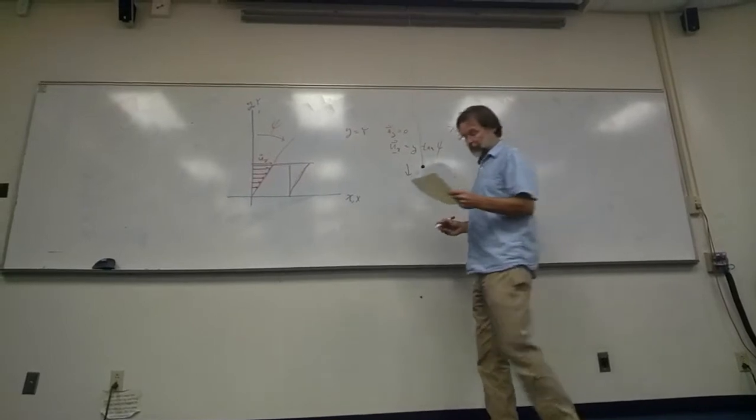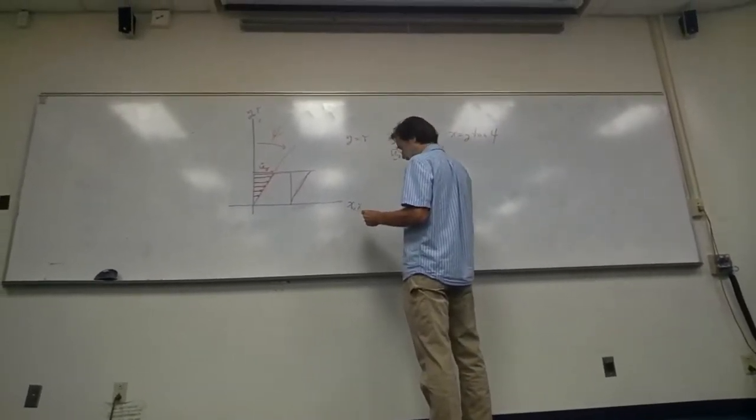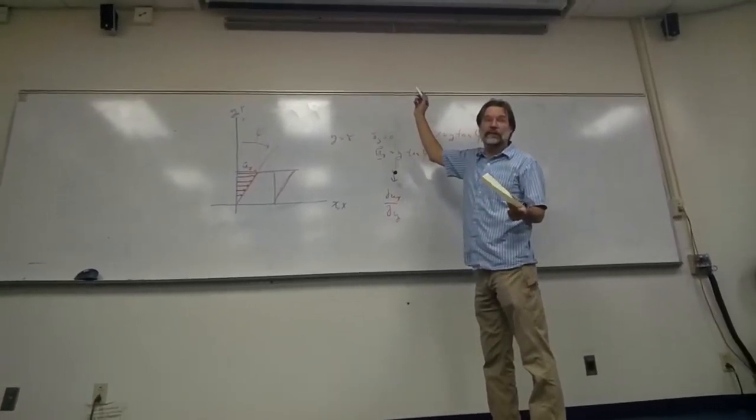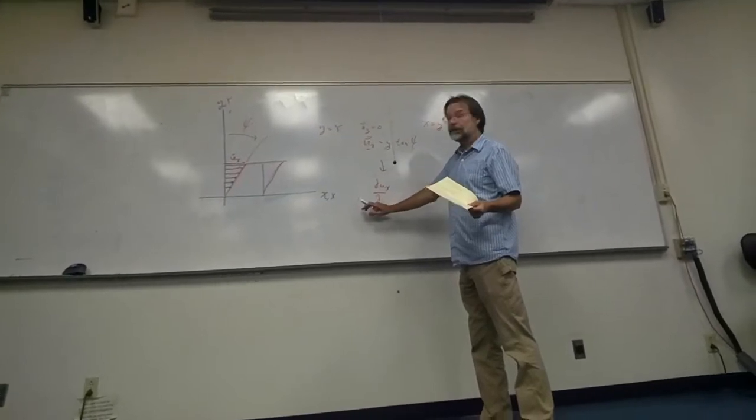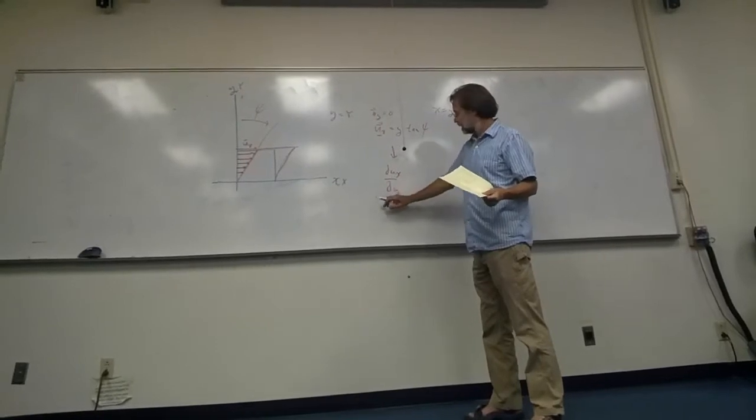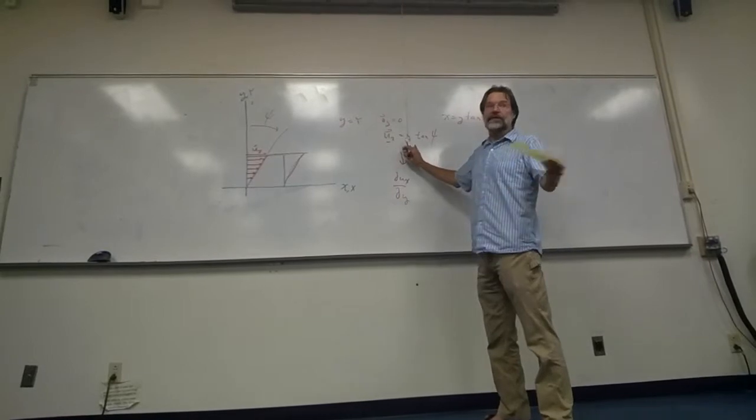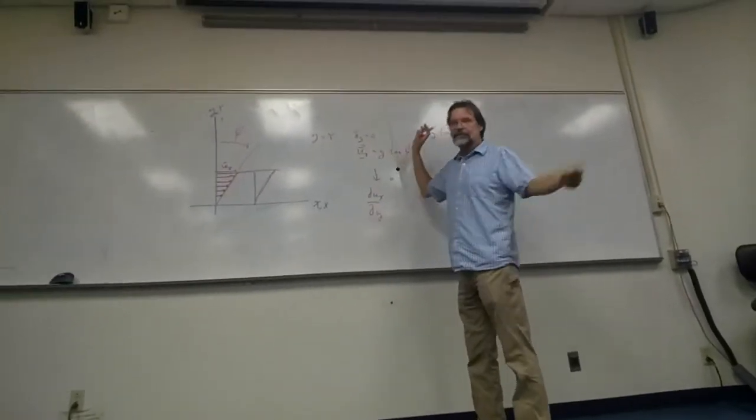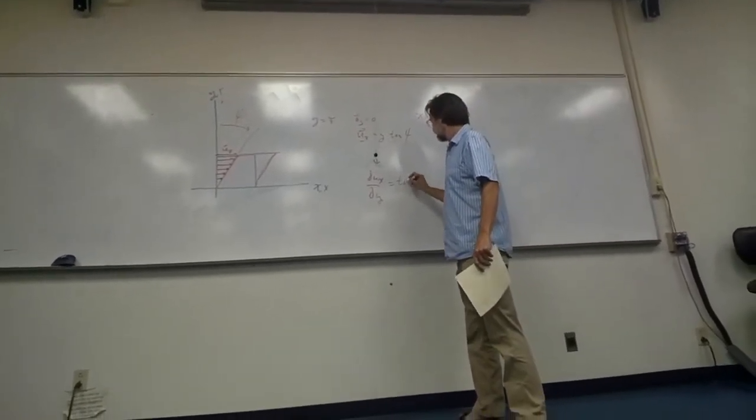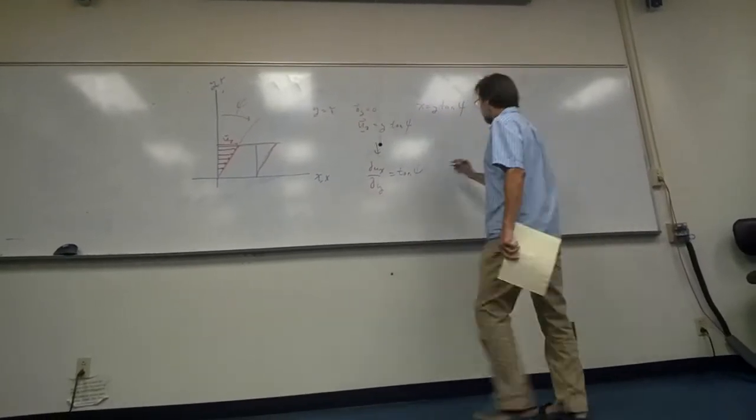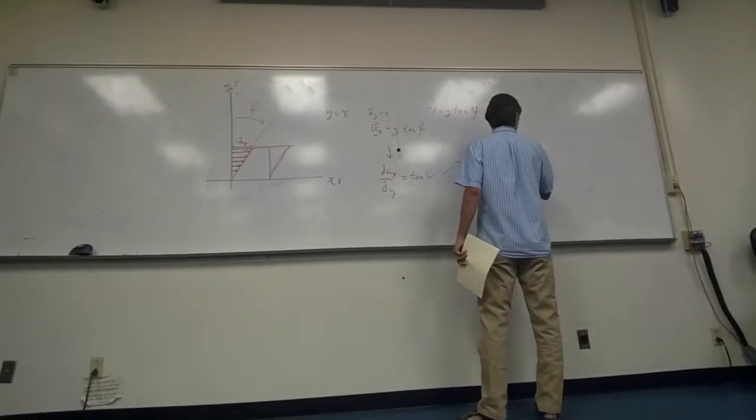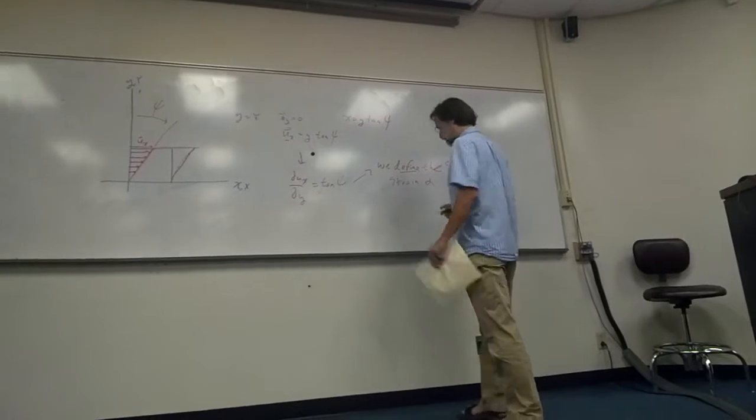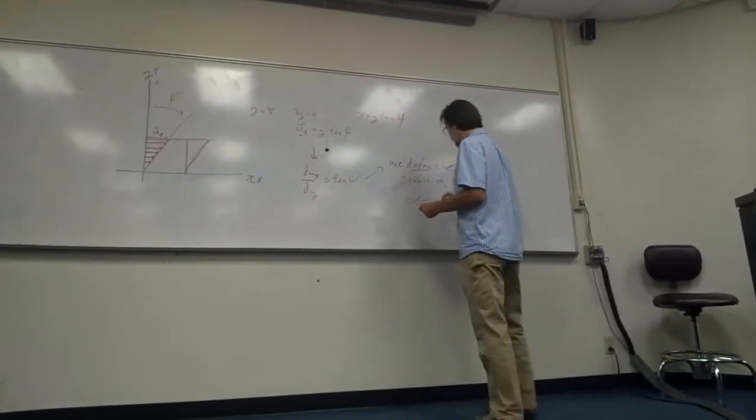Now, extending this concept of dux dy. Well, actually, I could do duy dy. It's going to be 0. Right? But there's a quantity displacement gradient in the y direction. The displacement gradient of u in the x direction in the y direction is the derivative of that quantity with respect to y. There's the easiest derivative. It is what? d dy of y tangent psi is 1 times tangent psi. That equals tangent of psi. That's why we define the shear strain gamma.